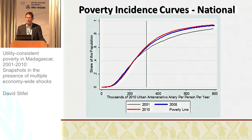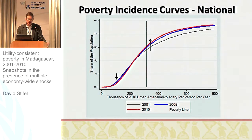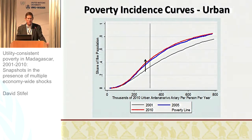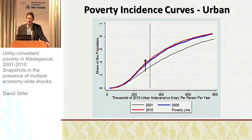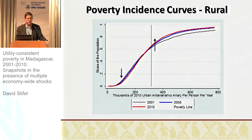Looking at poverty incidence curves, at the national level, around the poverty line there are more poor. But at the lower end of the distribution, the poorest of the poor have higher levels of expenditures, which is captured in the depth and severity of poverty. In urban areas, between 2001 and 2005, we see a worsening of household consumption levels that persisted through the latter half of the decade. In rural areas, we see a marginal increase in poverty around the poverty line, but an improvement in well-being for the poorest 50 percent of the population in Madagascar.